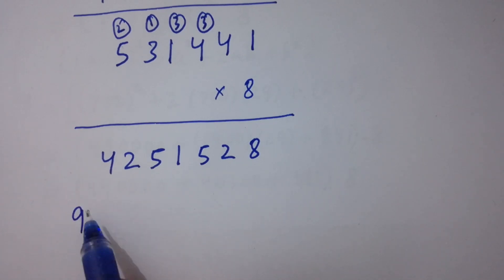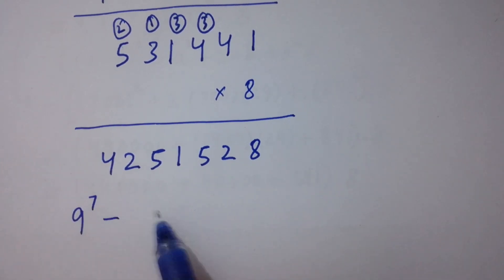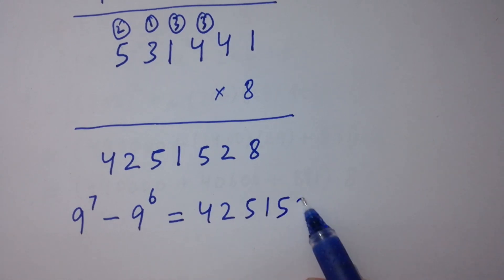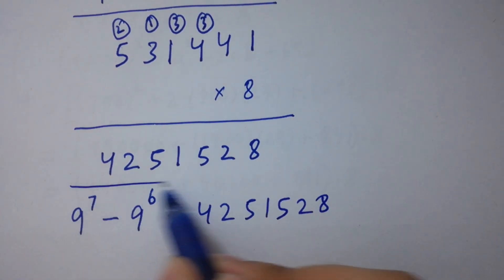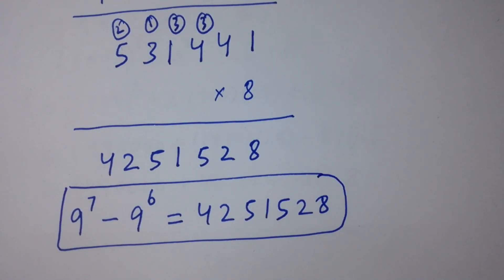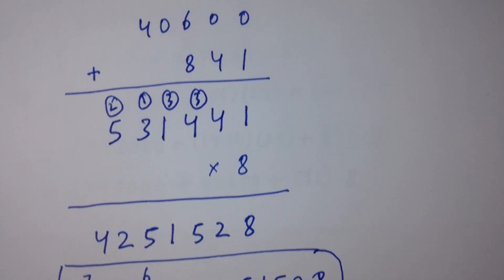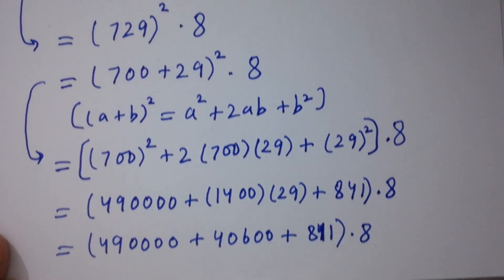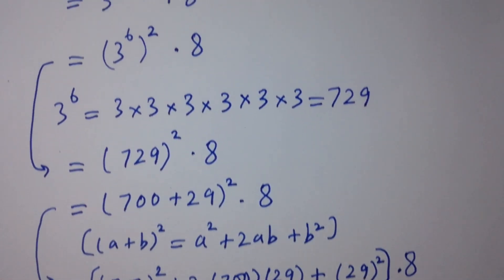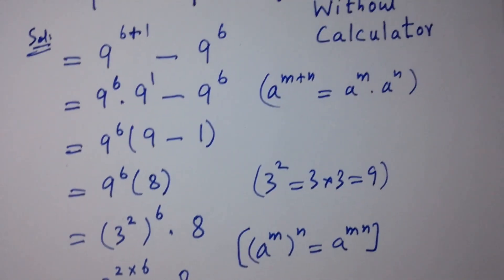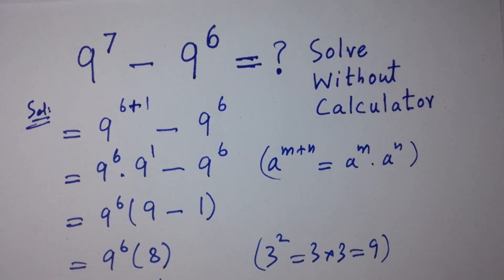So 9 to the power 7 minus 9 to the power 6 equal to 4251528. Finally I solved this without any calculator. Thanks for watching this video, please subscribe this channel to get the notification of my new videos and don't forget to share these videos with your classmates and friends so that they also have a benefit. You can also visit the playlist of this channel to learn more.